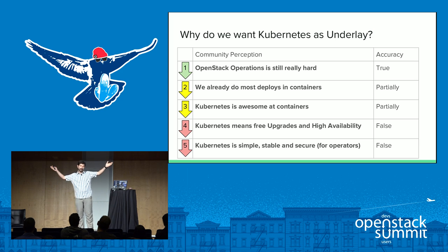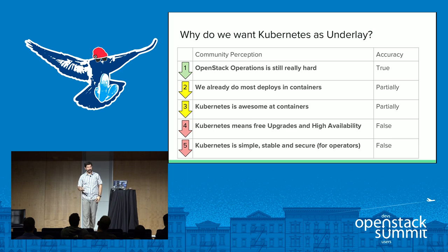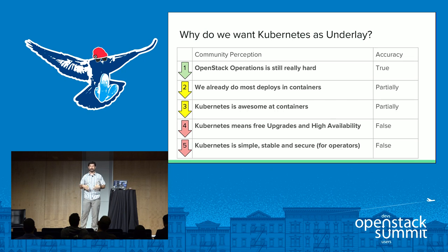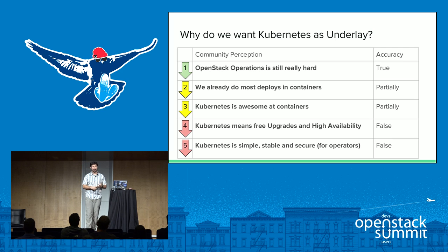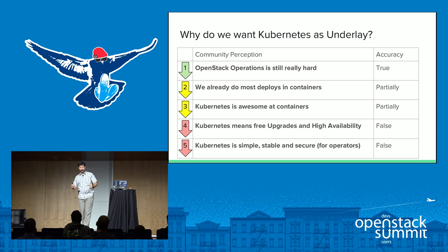So why do this? We have a couple of assumptions driving this desire to have OpenStack run with a Kubernetes underlay. First, OpenStack operations is still really hard — people generally agree that's true. I would refine this: data center operations is still really hard, and OpenStack is just a victim of that. We're already doing most of our deploys in containers anyway — there's Kolla, OpenStack Ansible, Juju — everybody's already using containers.